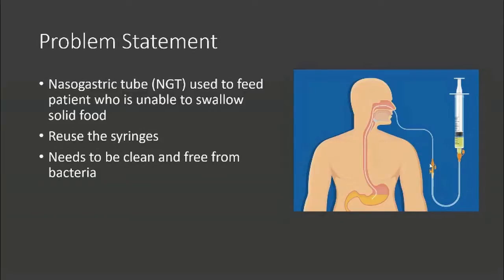NGT, nasogastric tubes, are commonly used in healthcare institutions to aid patients with disability in swallowing solid foods. Patients are fed about five times a day and the syringes are reused throughout the whole week. Therefore, the syringes need to be clean and dry so as to not attract bacteria that could be harmful when entering the patient's body.